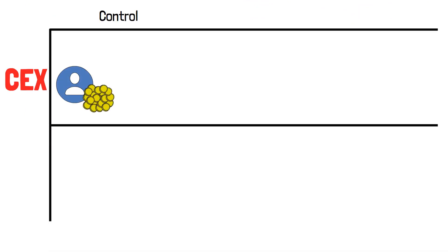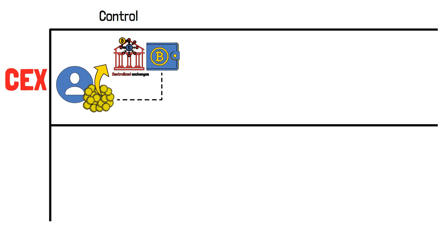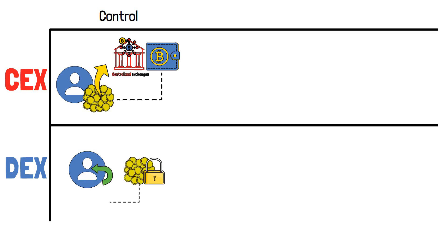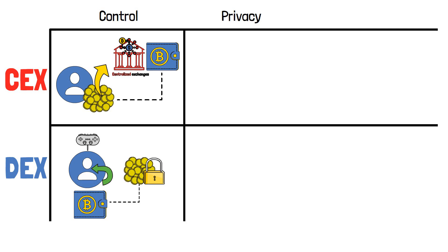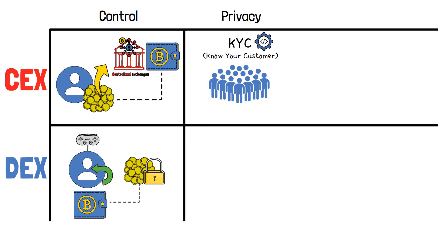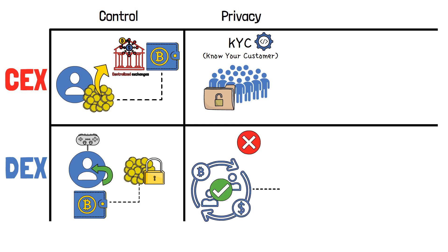Firstly, consider control. When dealing with a centralized exchange, users effectively surrender control of their assets to a central entity — essentially, their crypto is put into the exchange's wallet. In contrast, DEXs put the power back in users' hands. These assets remain securely in users' wallets until they decide otherwise, giving them autonomy. Privacy is another significant contrast. Centralized exchanges frequently mandate users to undergo thorough KYC, or Know Your Customer procedures, which compromise user privacy. DEXs don't do that — they enable trades without revealing the user's identity, safeguarding personal information.